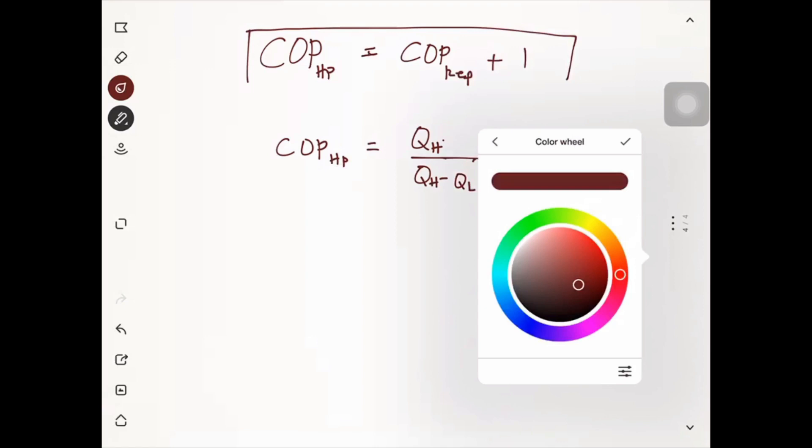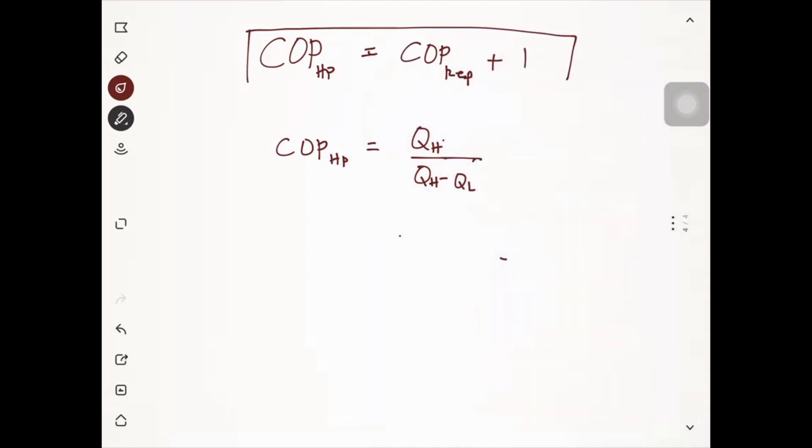And also for the COP of the refrigerator will be the QL over the work net, or QH minus QL. So we are going to manipulate this one through a simple mathematical method.